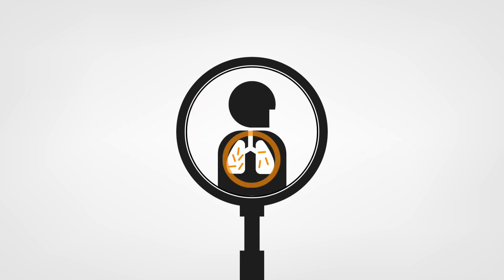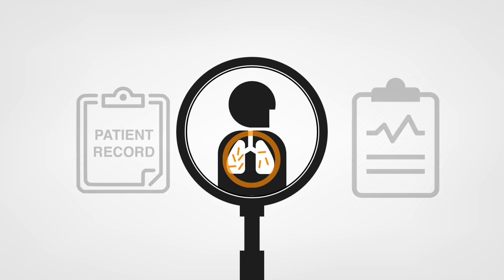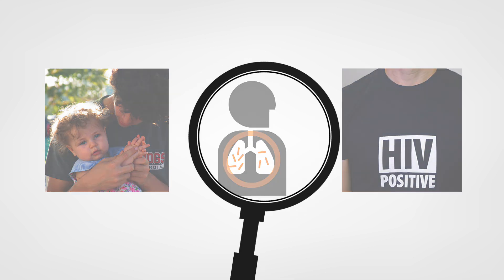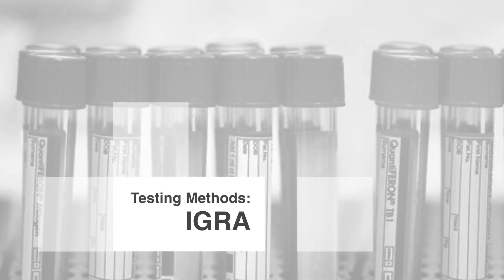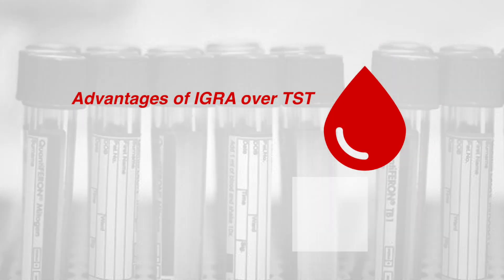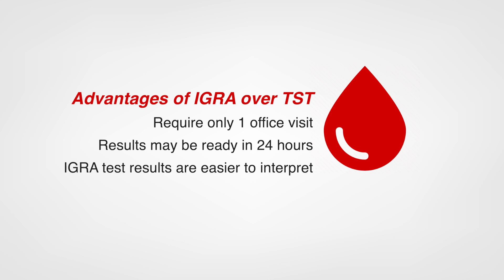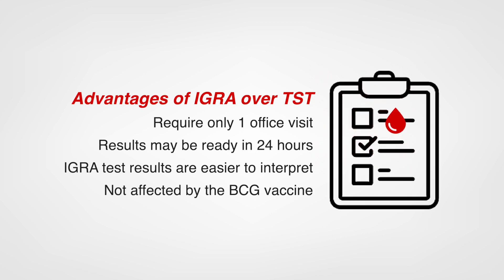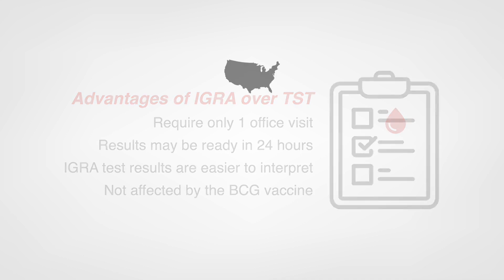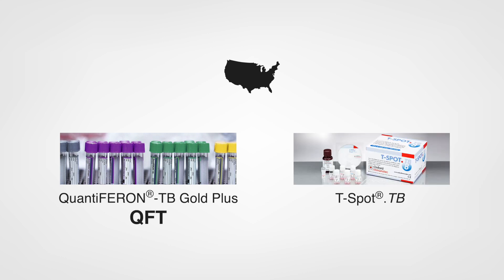When evaluating someone for LTBI, consider the complete clinical and epidemiologic information, particularly for high-risk populations such as young children or people living with HIV. Keep in mind that both TST and IGRA results can be affected by immunosuppression. IGRAs, which are blood-based tests, have several advantages over the TST. They require only one office visit, and results may be ready in 24 hours after they are received by the laboratory. IGRA test results are easier to interpret, since the interpretation is included in the report, and they are not affected by the BCG vaccine. Two types of IGRAs are available in the United States: QuantiFERON TB Gold Plus, or QFT, and the T-SPOT TB test.